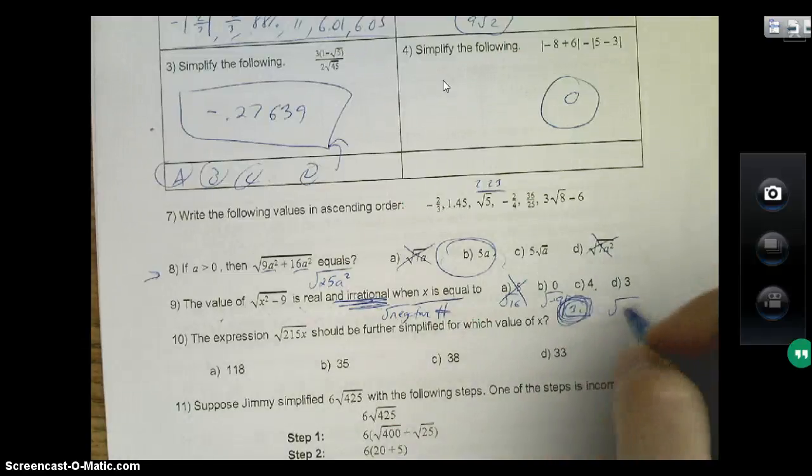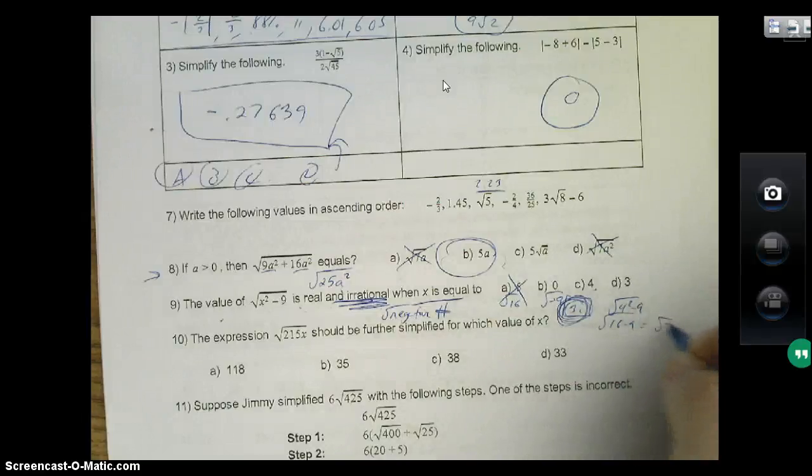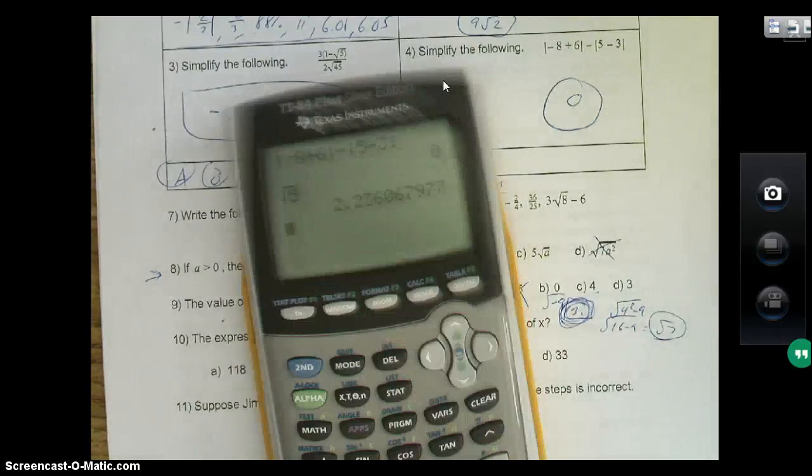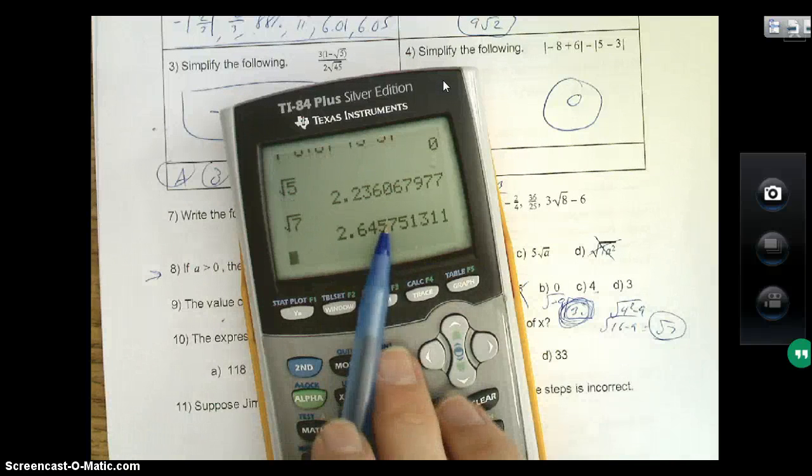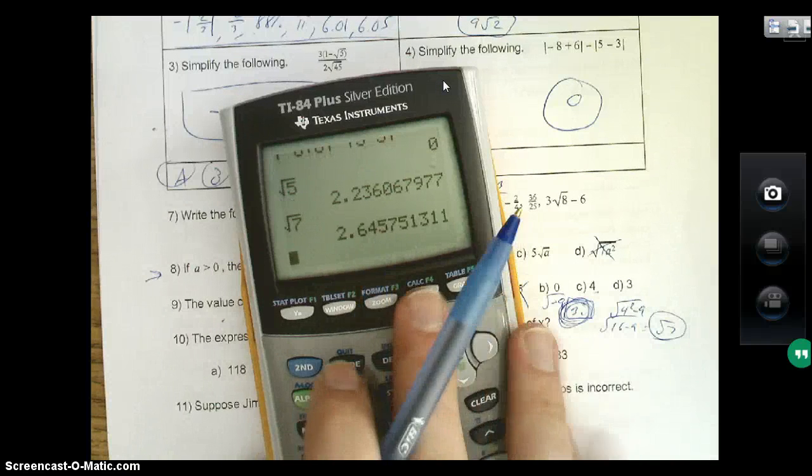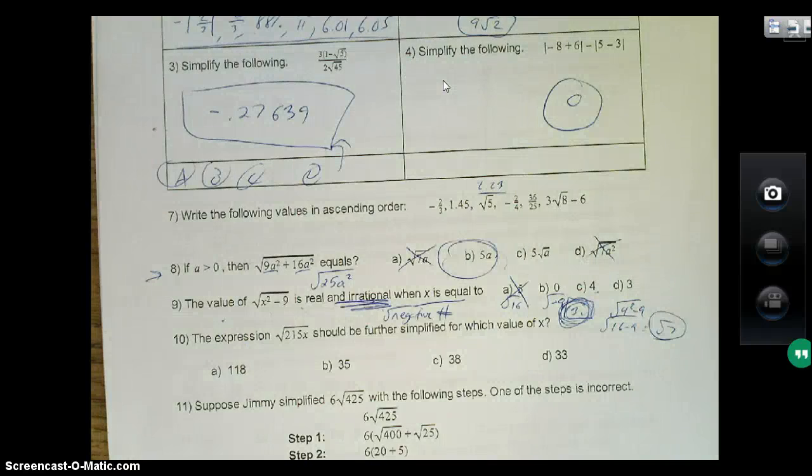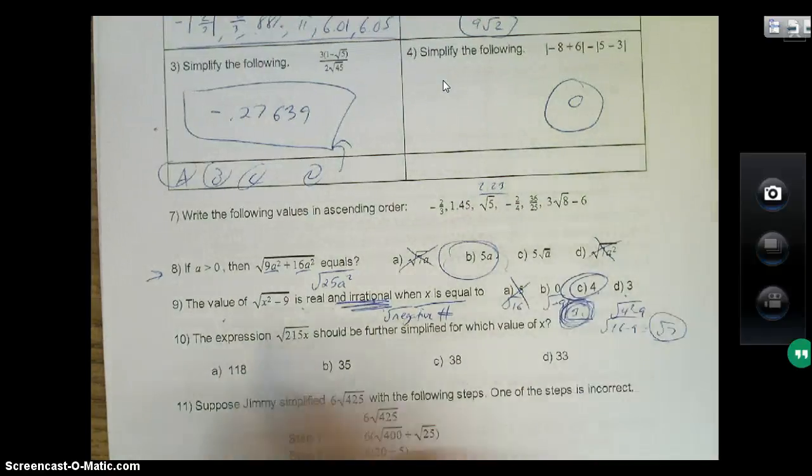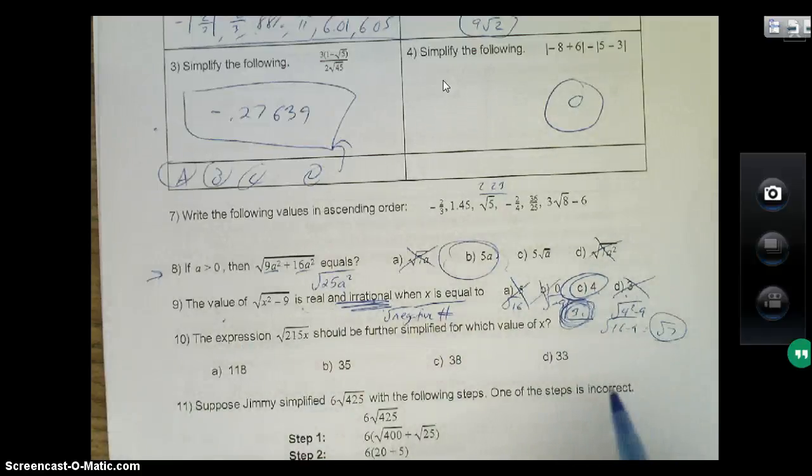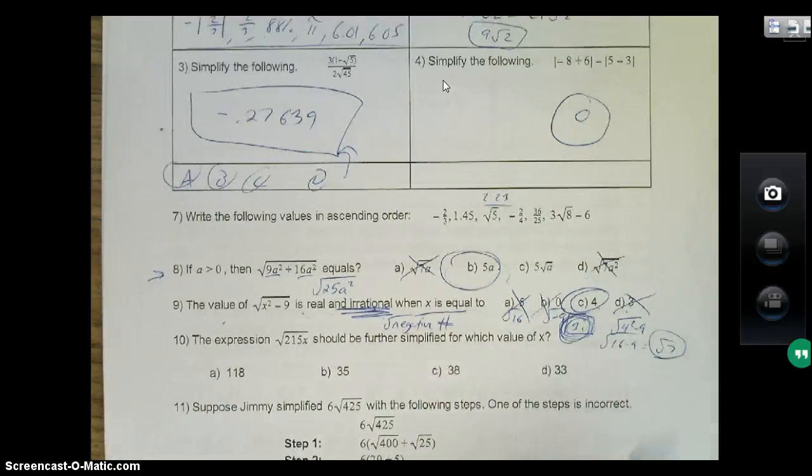All right, if I put in here square root of 7, I actually get an irrational number, it kind of goes on forever, but the square root of 7 is still real. So that's actually the best option because if I put 3 in here, 3² is 9, 9 minus 9 is 0, square root of 0 is 0.